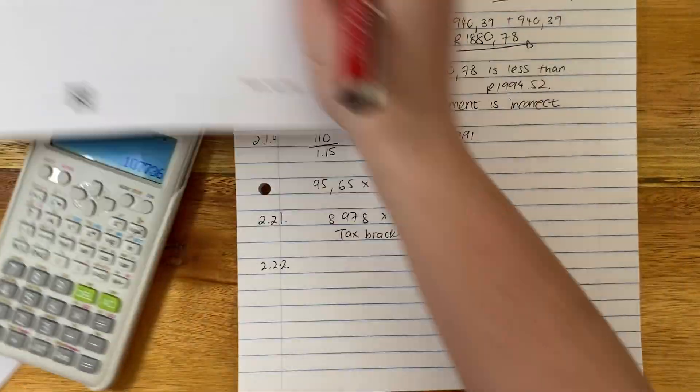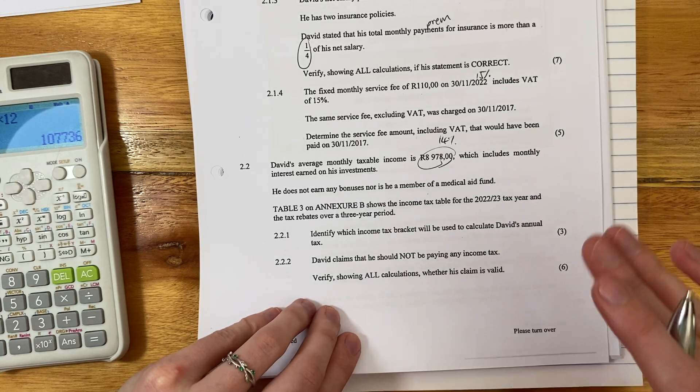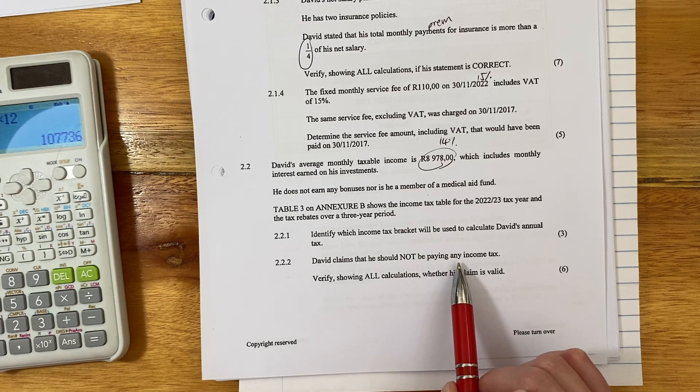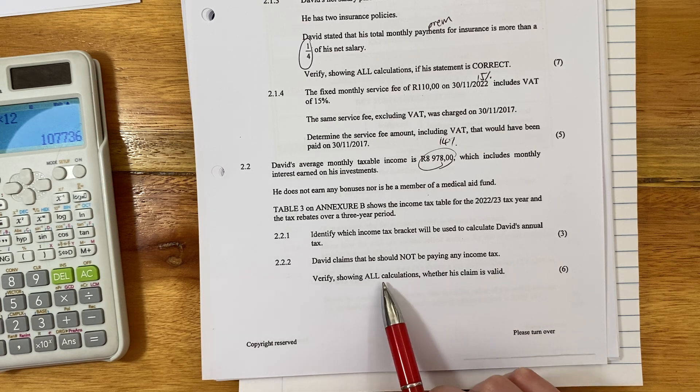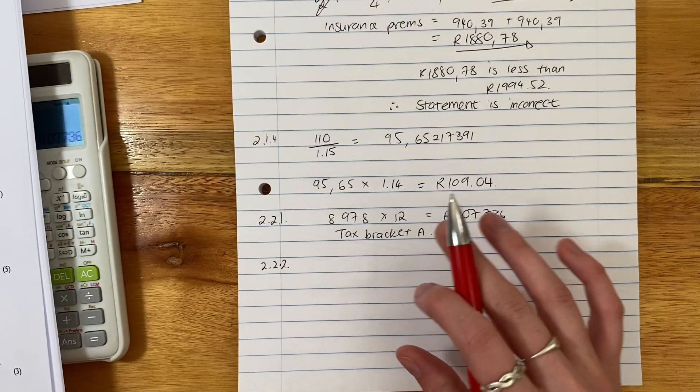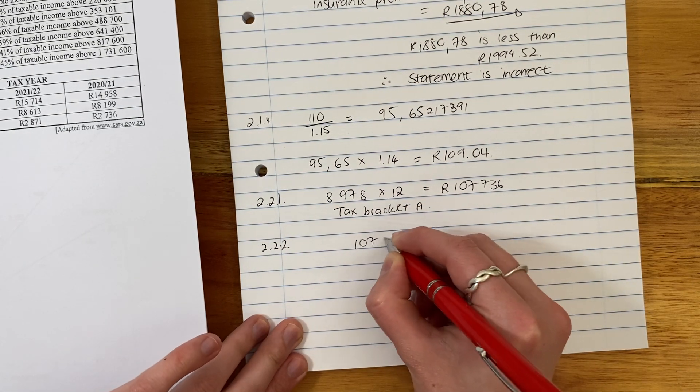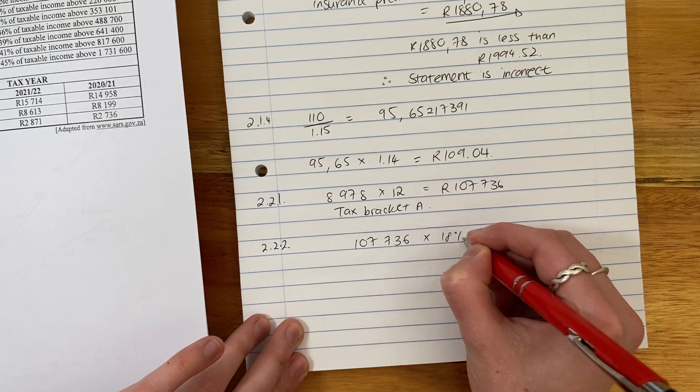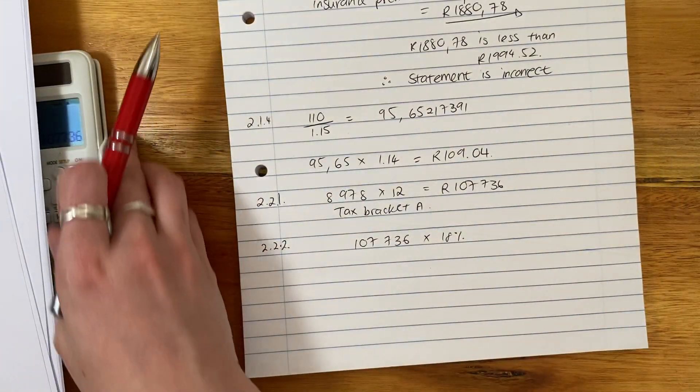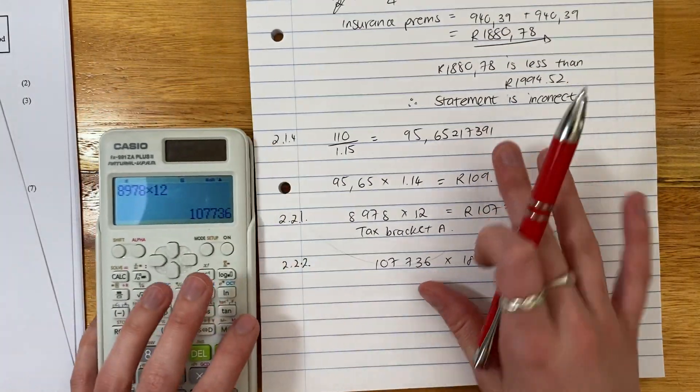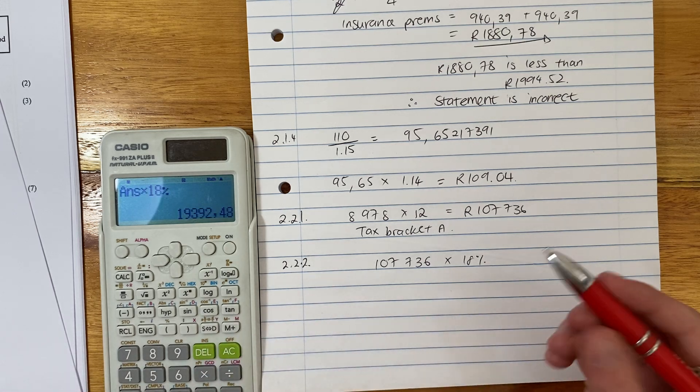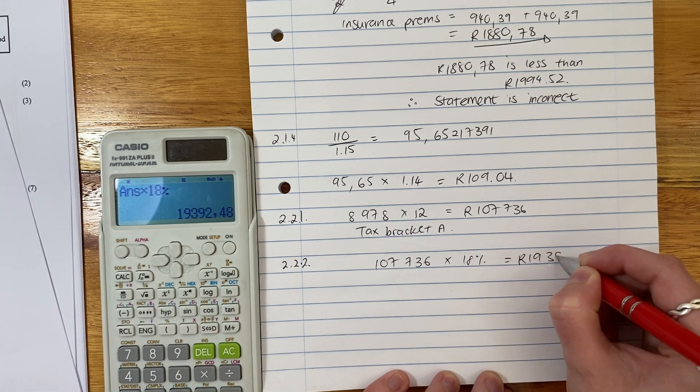Let's now go on to the next question. So now, it's one of these verify questions. So it says, David claims that he should not be paying any income tax. Verify showing all calculations whether his claim is valid. Let's do this calculation. So we know he's in the first tax bracket. So we're going to say, well, 107,736. And we're going to times that by 18%. And you're going to be saying, good grief, what do you mean? Well, if you're in that tax bracket, you get 18% tax. This is a very simple tax question. So please just be careful that you also have practiced more complex questions than this. Because this can give you a false sense of security.